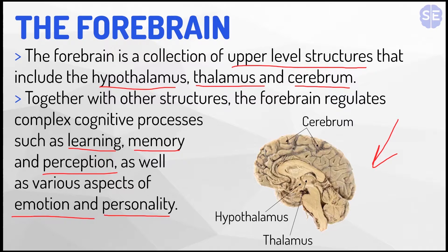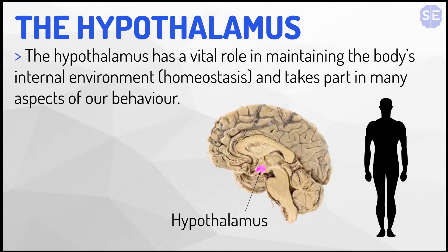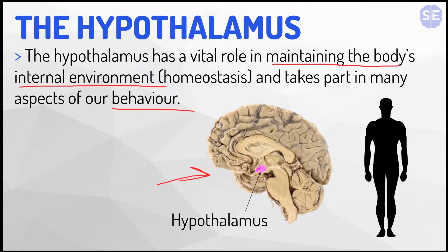Now I'll explain the first part of the forebrain: the hypothalamus. The hypothalamus has a vital role in maintaining the body's internal environment, which is homeostasis, and takes part in many aspects of our behavior. Here in this diagram you can see where it is in the pink, and it maintains the body's internal environment — like the temperature of the body, the digestive system, the heart rate, all of it.